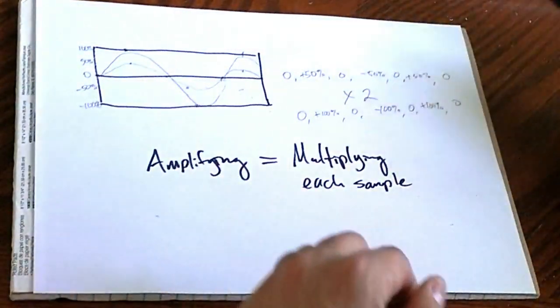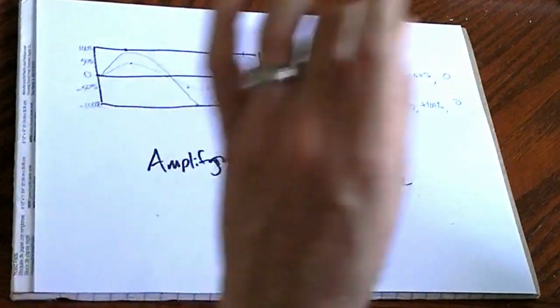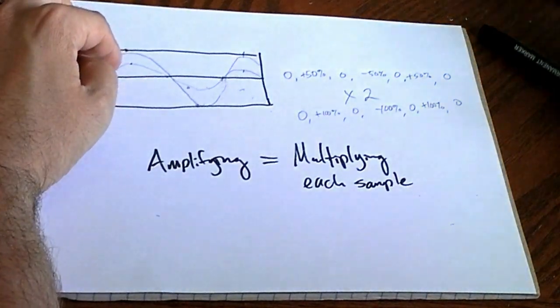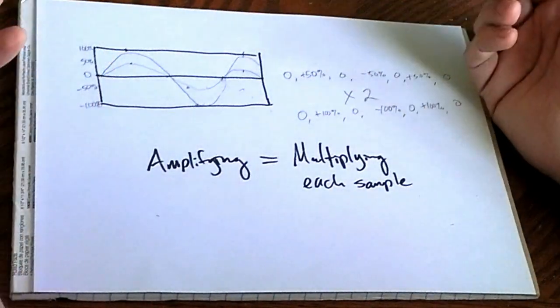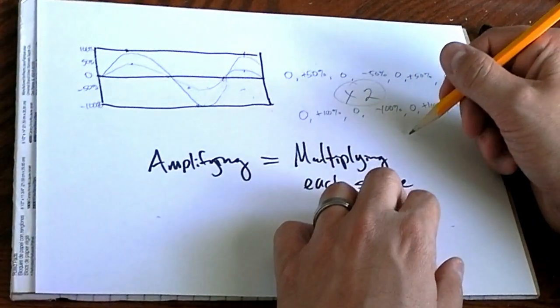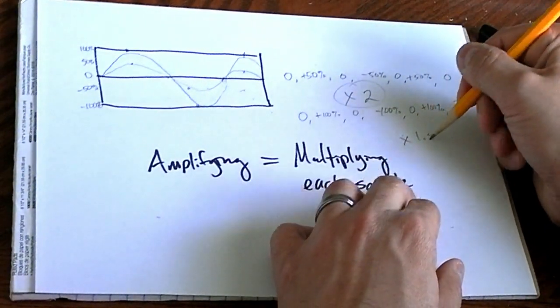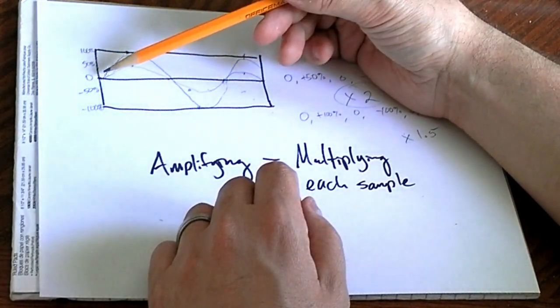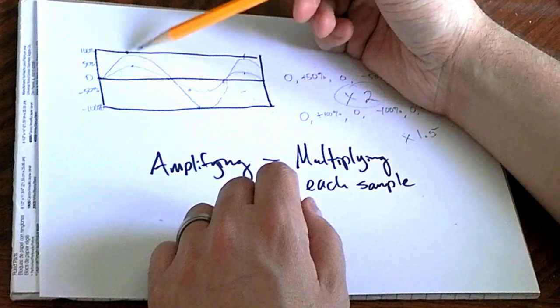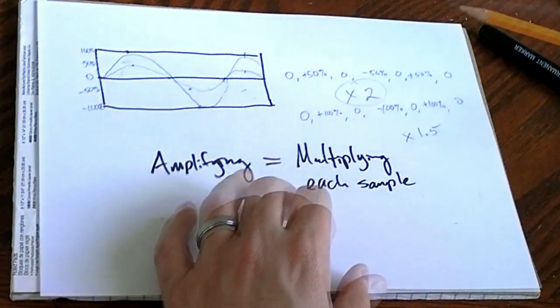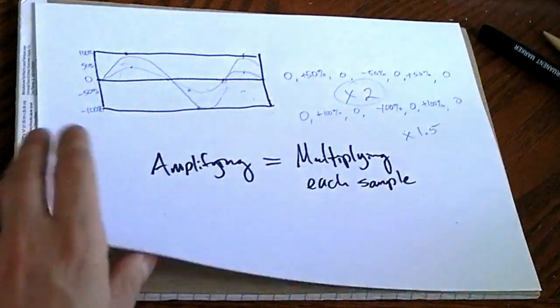And this is where floating point bit depth for processing comes in. Let's say you wanted to amplify this by, instead of by 2, let's say you wanted to amplify it times 1 and a half. Well, at our bit depth here, where we've only got 0, 50, and 100, there is no place to put that. So, bit depth helps when you're doing more amplification.